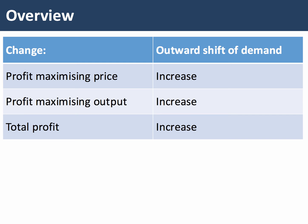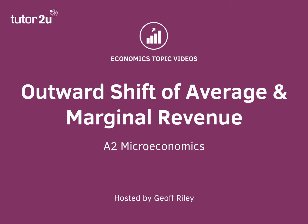Just to summarize: if there's an outward shift of demand, the profit maximising price goes up, so too does the profit maximising output, and assuming costs remain the same, the total profit of the business will also increase. That's been a diagram short showing the effect of an outward shift in the revenue curves.